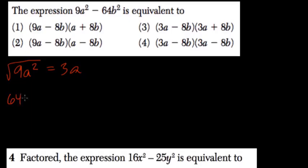And 64b squared, square root, is 8b. So we're subtracting these two squares. It's called the difference of two squares.